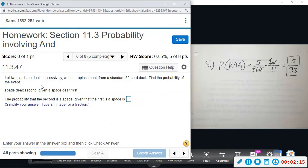All right, number six says let two cards be dealt successively without replacement from a standard 52 card deck. Find the probability of the event a spade dealt second, given that a spade was dealt first. So we're doing conditional because we have that 'given that' wording.